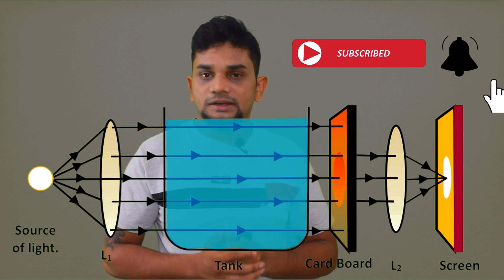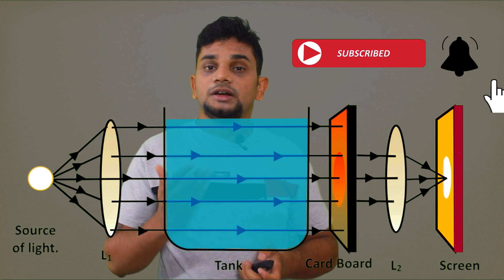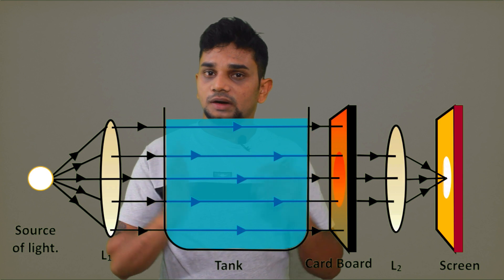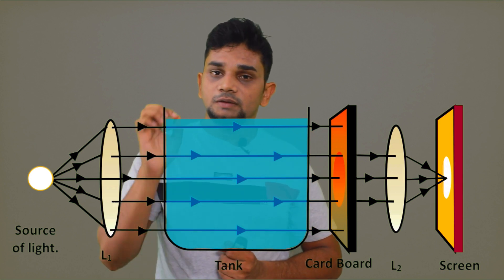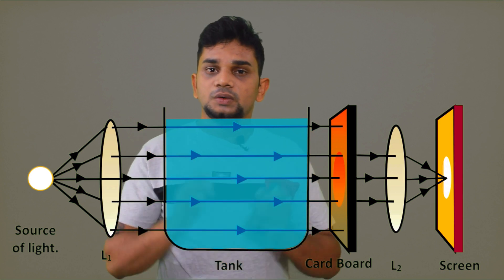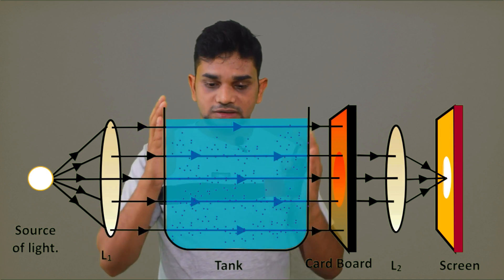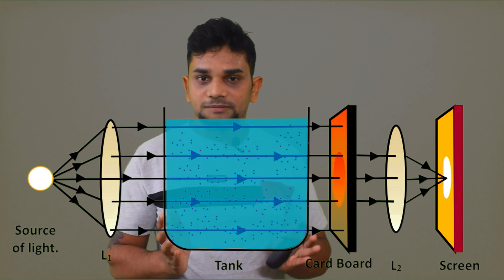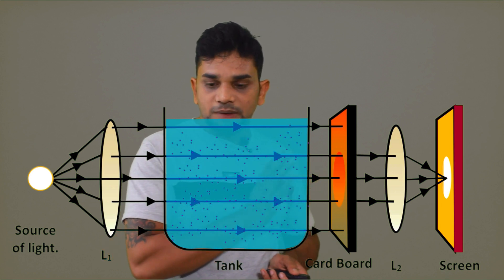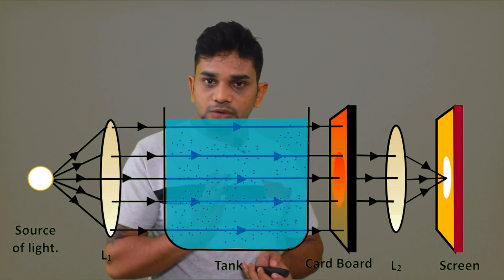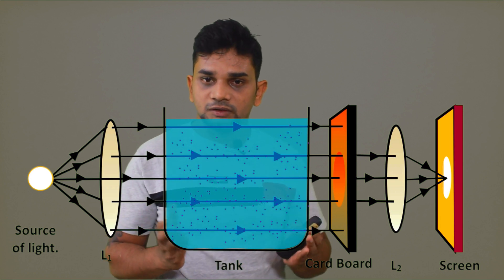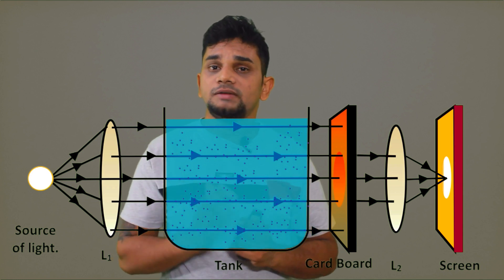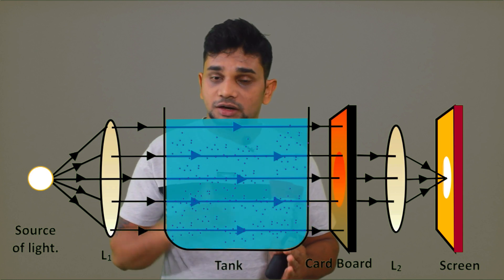When we add sulfuric acid, you can see particle formation in the container. When light passes through this solution containing small particles, there will be scattering. The colors having lower wavelength will undergo more scattering, while colors with higher wavelength will scatter less.